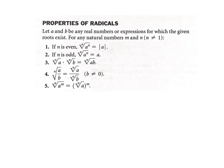A few properties you need to know. Number one: if n is an even root and you take an even root of a number, you're going to get the absolute value, which means it's got to be positive. If it's an odd root, it doesn't matter if it's positive or negative — you keep the same sign. Number two says the same thing. Number three: you're okay to multiply radicals if they have the same root. Number four: you can divide radicals if they have the same root.